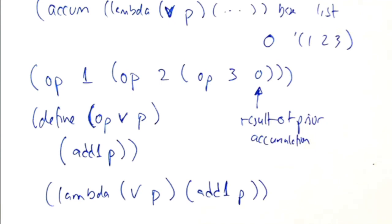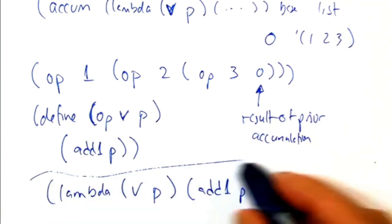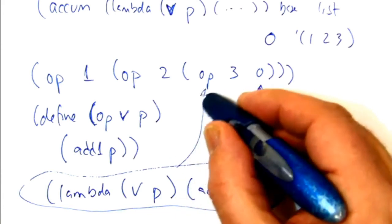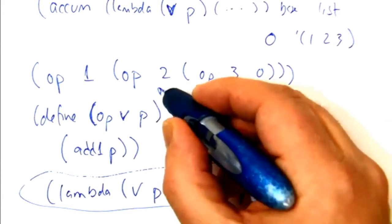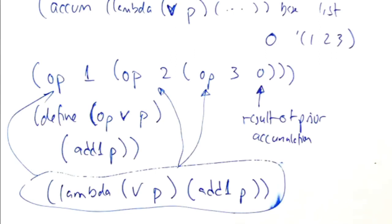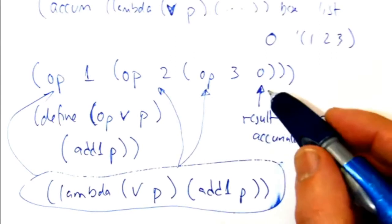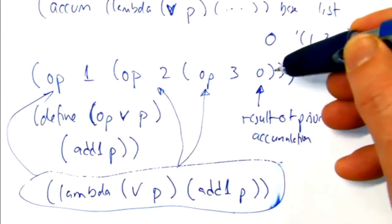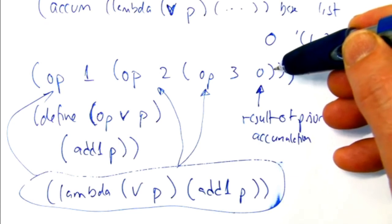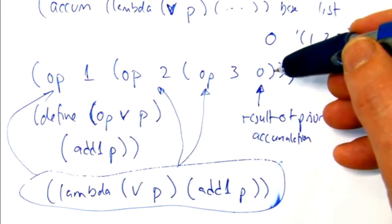So if you imagine sticking this thing in to each of these ops, that's where it's going. Right? Okay, so the first time it gets to actually do its thing, it receives a three and a zero. And it's like, I'm going to add one to the zero and produce a one.